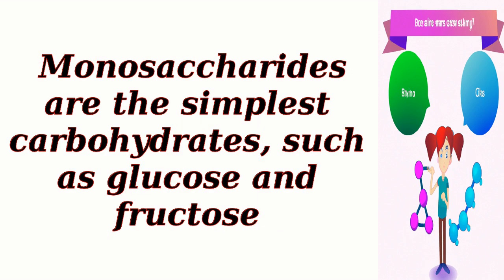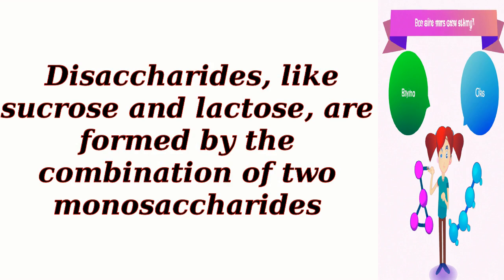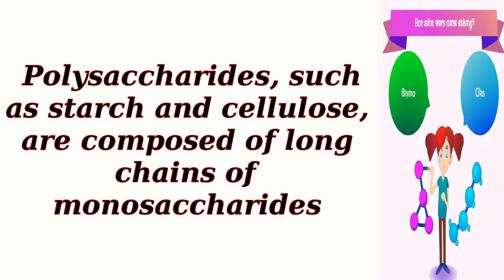Monosaccharides are the simplest carbohydrates, such as glucose and fructose. Disaccharides, like sucrose and lactose, are formed by the combination of two monosaccharides. Polysaccharides, such as starch and cellulose, are composed of long chains of monosaccharides.